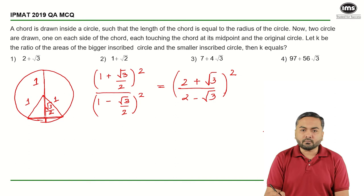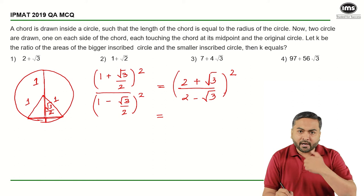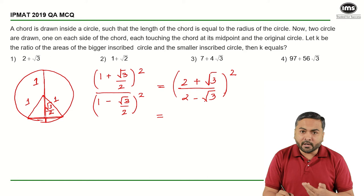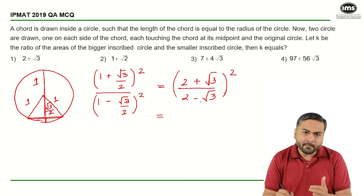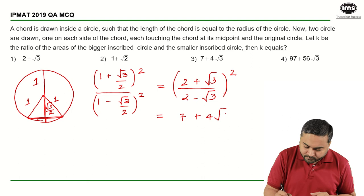If I have 2 minus root 3 in the denominator I can rationalize this. On rationalizing if I multiply 2 plus root 3 in the numerator and denominator my denominator will be 4 minus 3 that is 1 and numerator will be 2 plus root 3 the whole square that will be 4 plus 3, 7 plus 2 into 2 root 3 that is 4 root 3 the whole square.